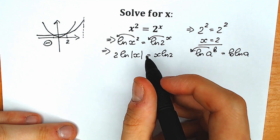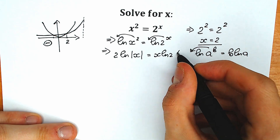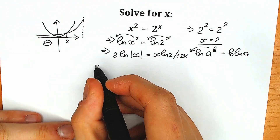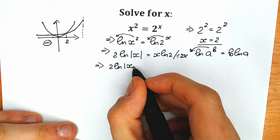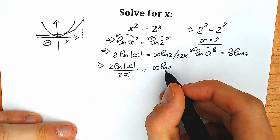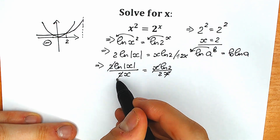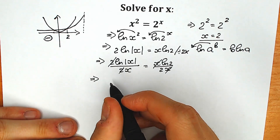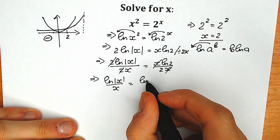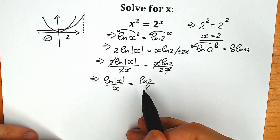Right now let's try to group our variables on the left side and our constant on the right side. For this, let's divide both sides by 2x. We're going to divide both sides by 2x. As a result we have 2 natural log absolute value x divided by 2x, and on the right side x natural log 2 divided by 2x. Here we cancel x on the right, and we cancel 2 on the left. We will have natural log absolute value x over x equal to natural log 2 over 2. So we have our variables on the left side and our constant on the right side.